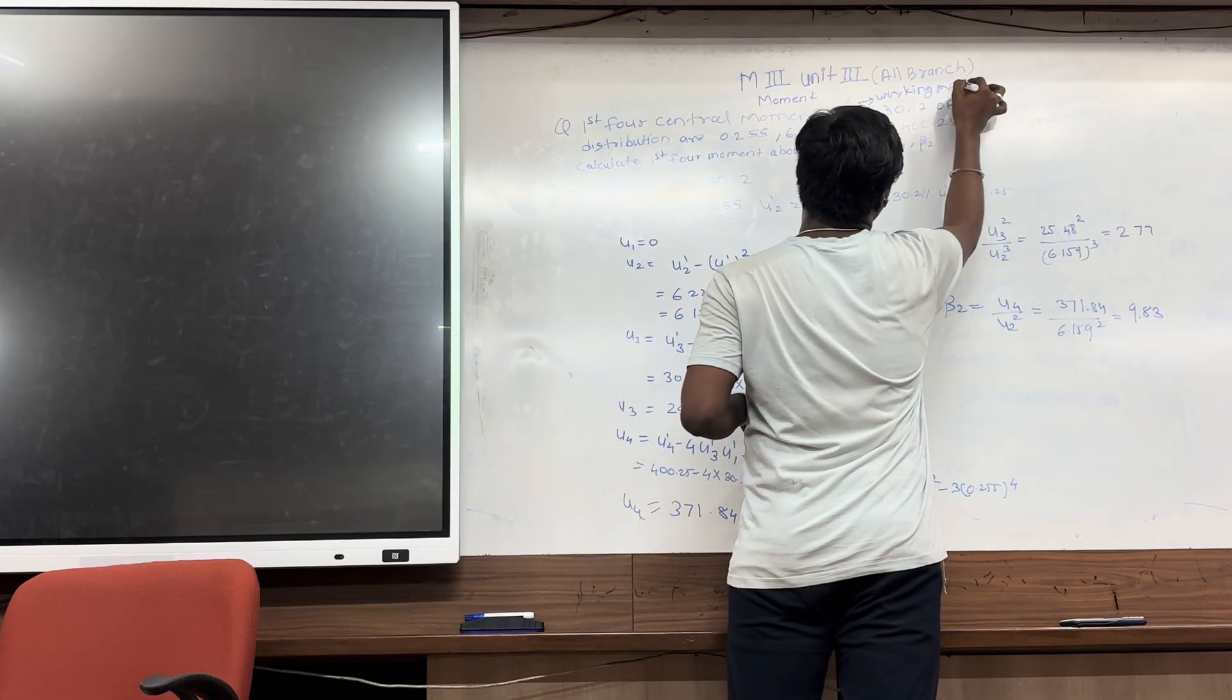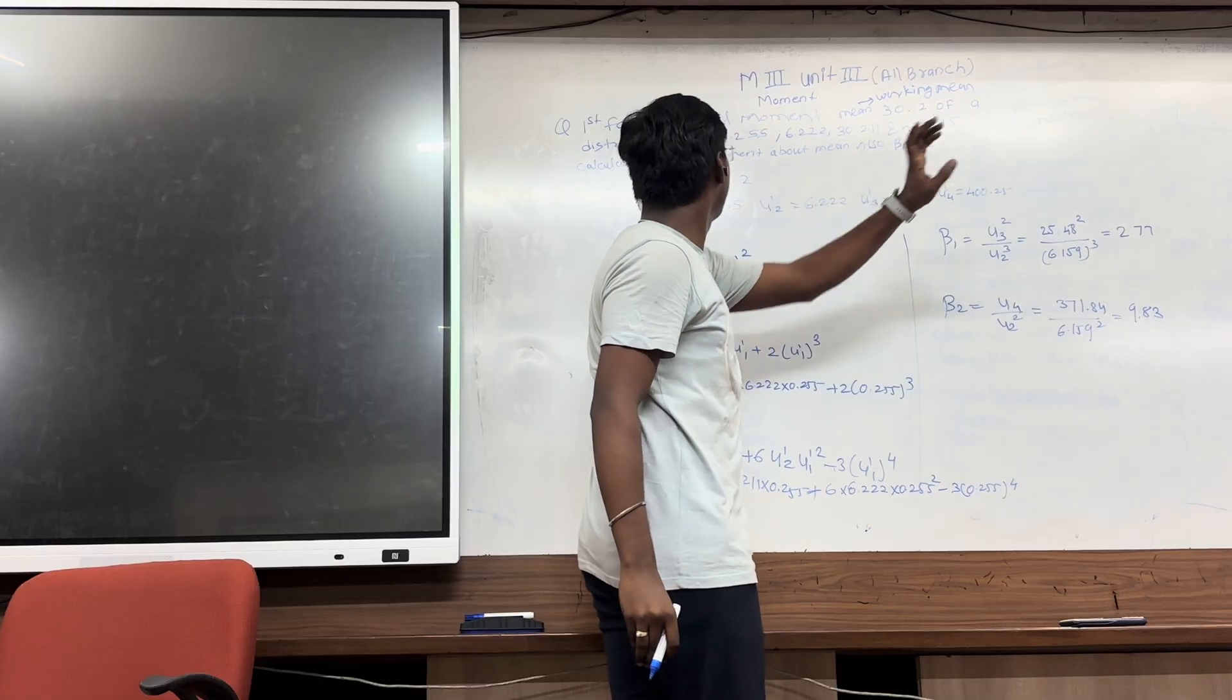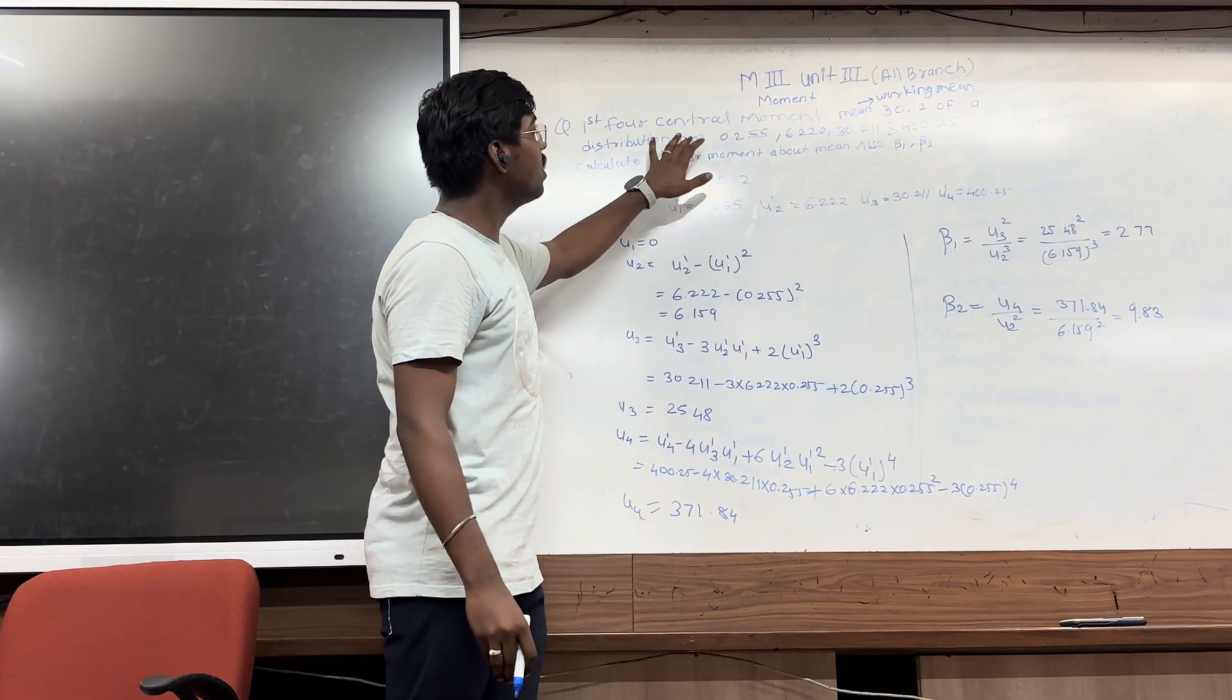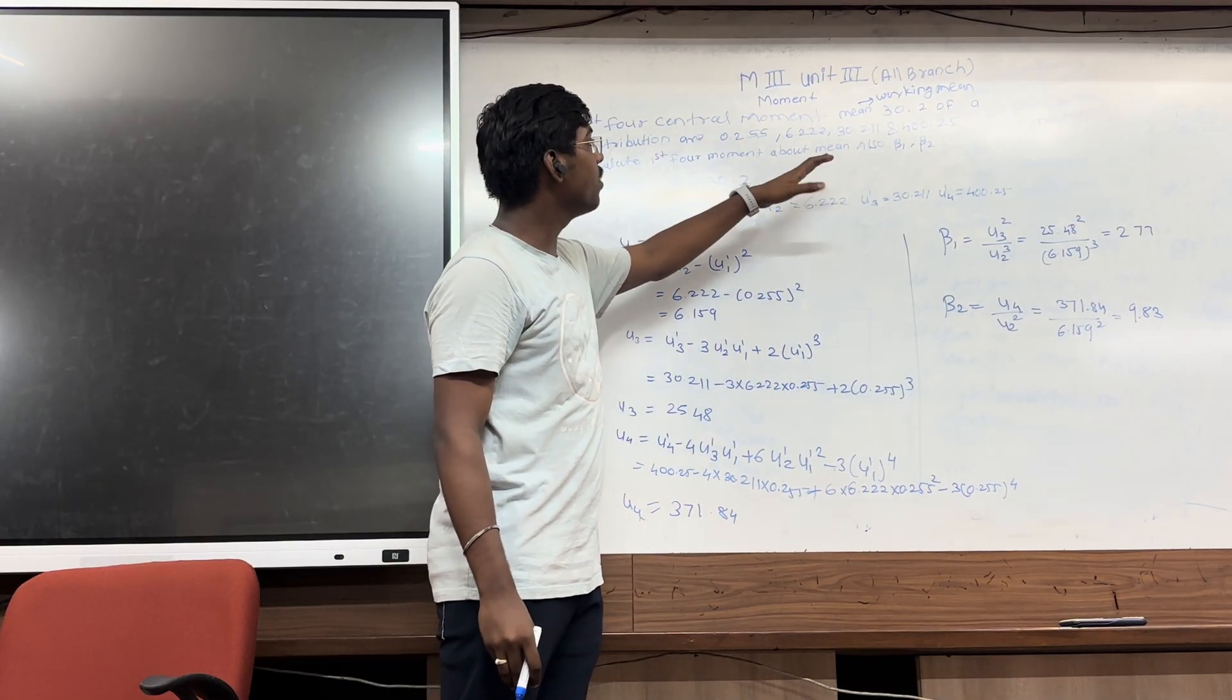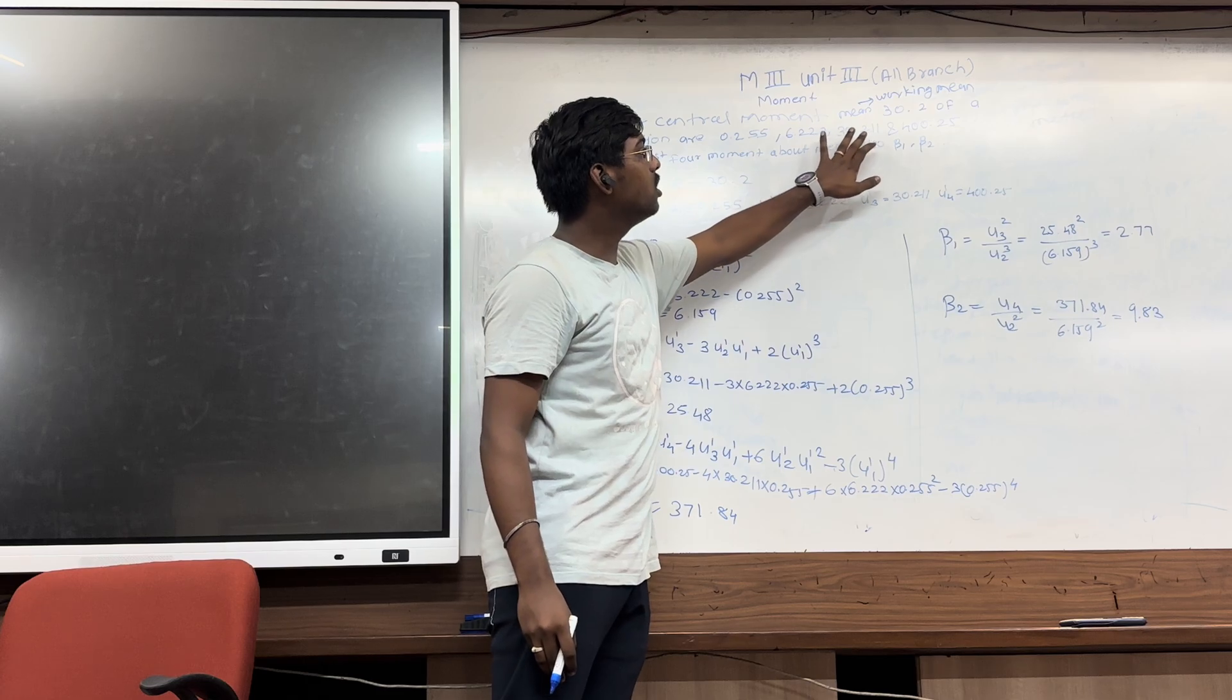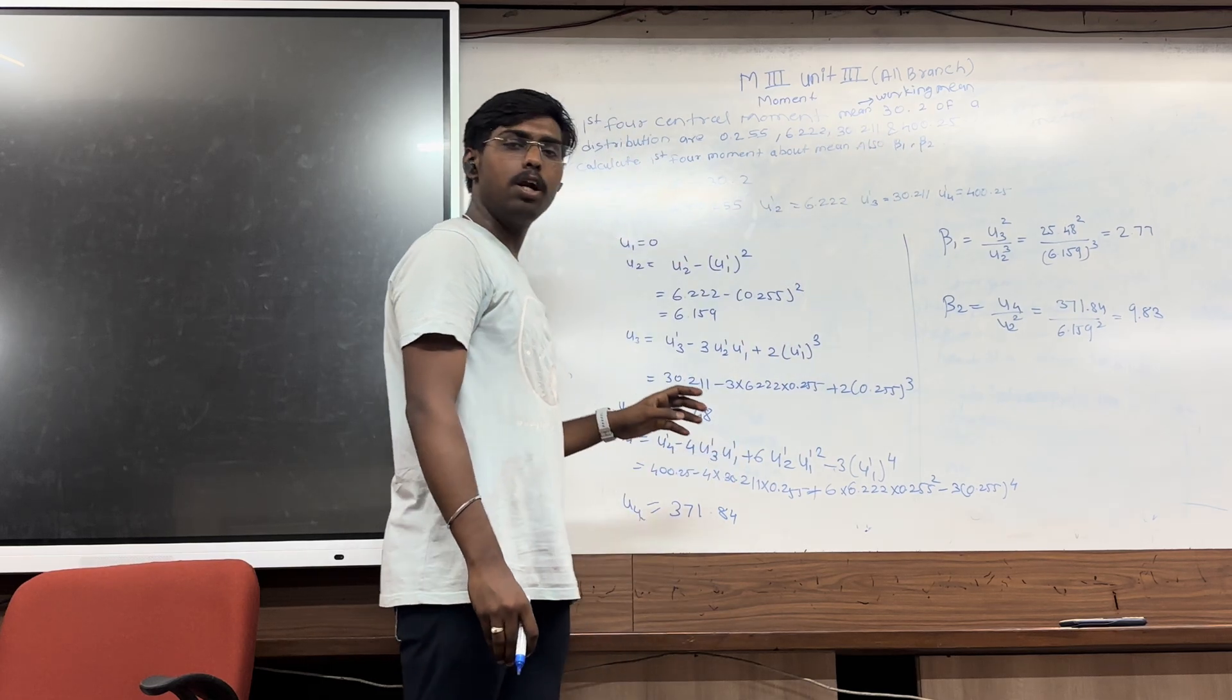Mean or working mean is 30.2 of the distribution are 0.255, 6.22, 13.21, and 400.25.